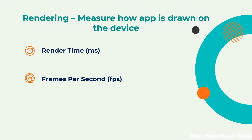Next would be frames per second. If you are switching between different screens — suppose there is one particular item you click on and then you want to fetch details about that item — the frame switching time is called frames per second. How many frames per second an application is able to load decides the performance of that application in terms of rendering.